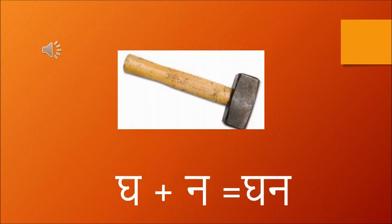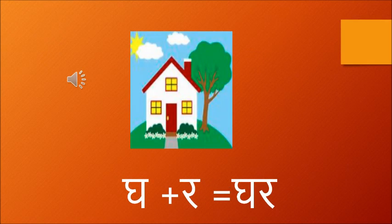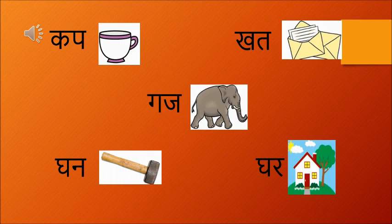Next is gha aur na. Ghar wala gha and nal wala na. Together gha aur na becomes ghan. Ghan means a hammer. Now moving on to the next one — gha aur ra. Together it makes ghar. Ghar means a house.